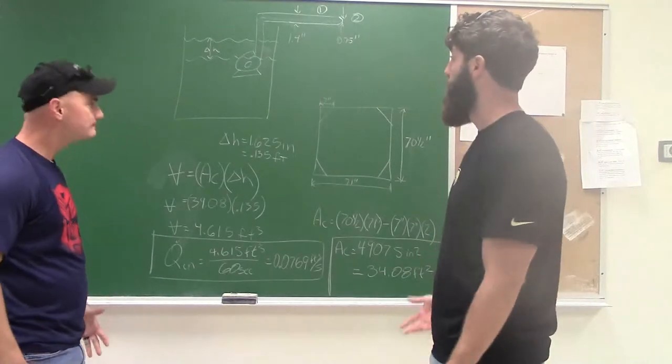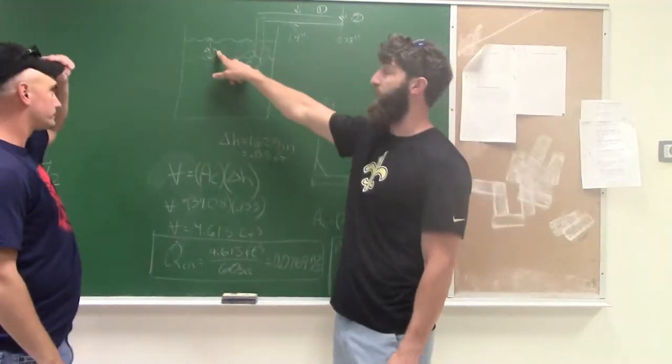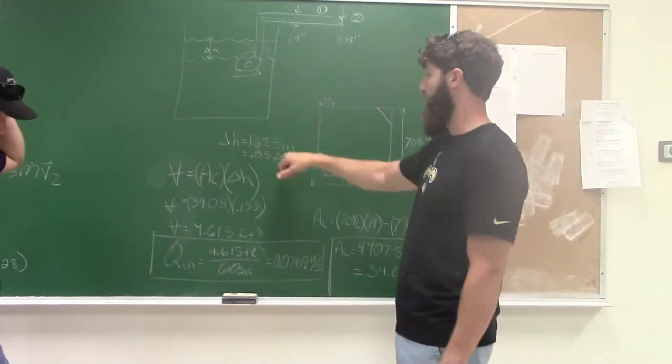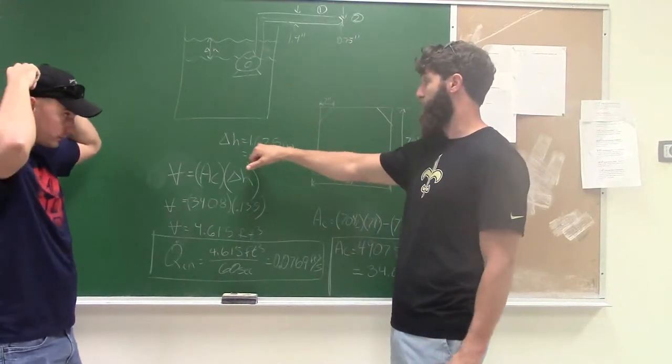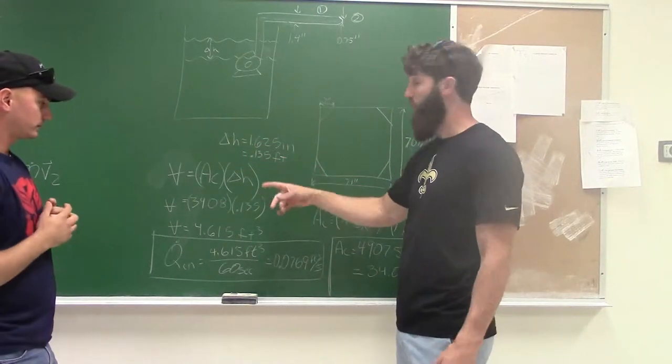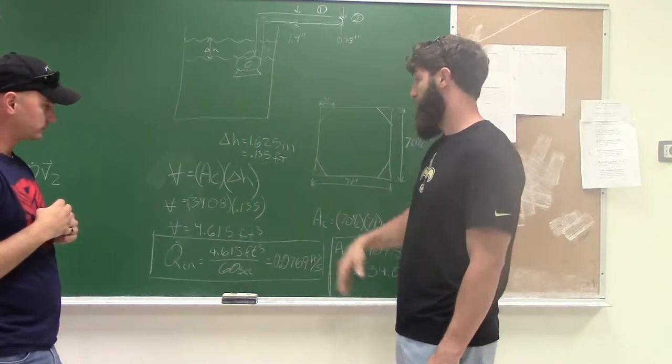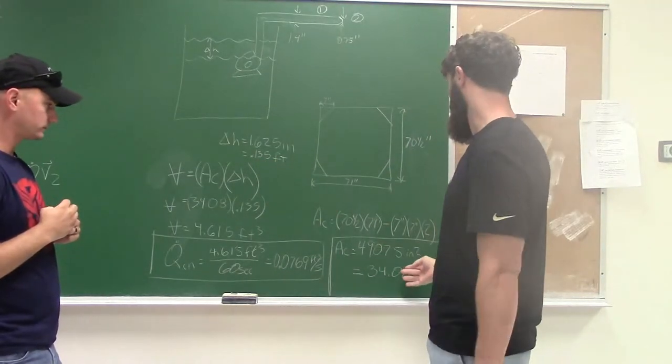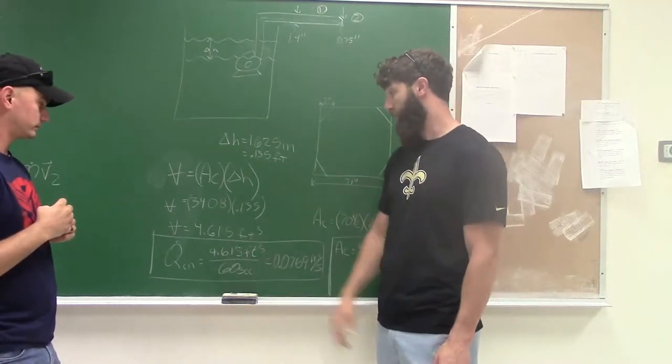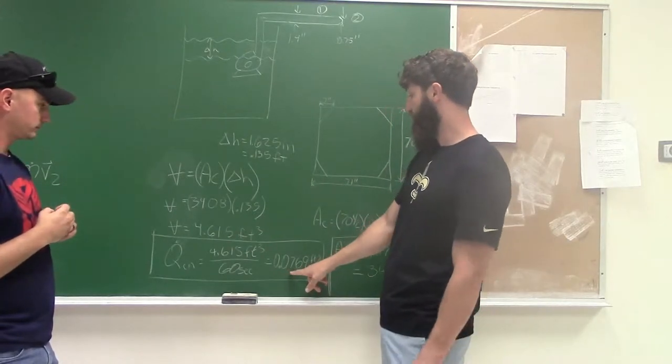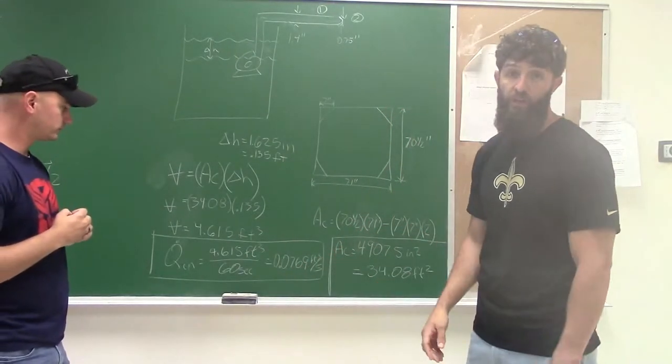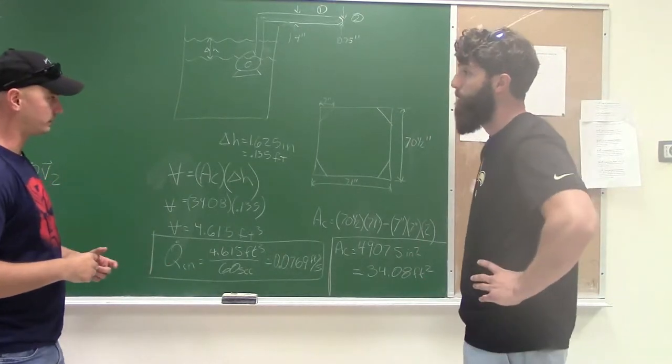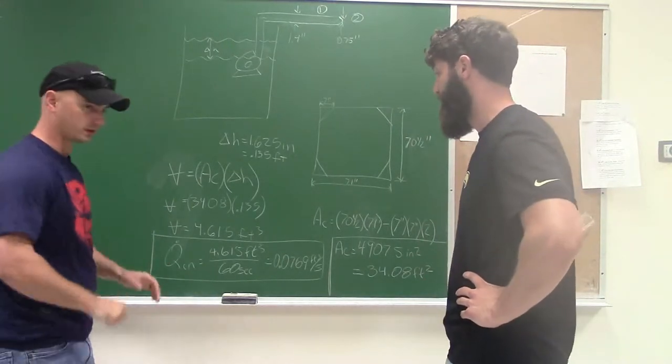Okay, so we performed our experiment, and the main thing we were trying to find is this change in H right here. So we found the change in H over 60 seconds, which was 1.65 inches, which converts to 0.135 feet. We plug it into our equation with our area that we found earlier, and we come out with a volumetric flow rate in of 0.0769 feet cubed per second. Alright cool, so now we can take that and I'm going to solve for the velocity now. Sounds good. Alright.